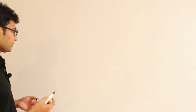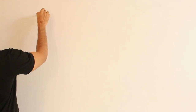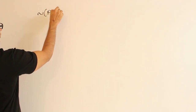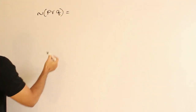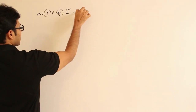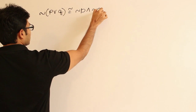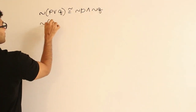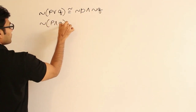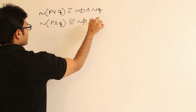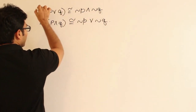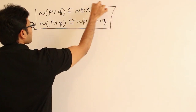You must have seen De Morgan's Law in all the other subjects as well. I will just show you with examples. If you have negation of (P or Q), then it is equivalent to negation P and negation Q. Or if you have negation of (P and Q), then it is equivalent to negation P or negation Q. This is called De Morgan's Law.